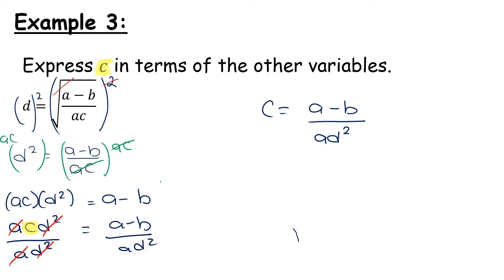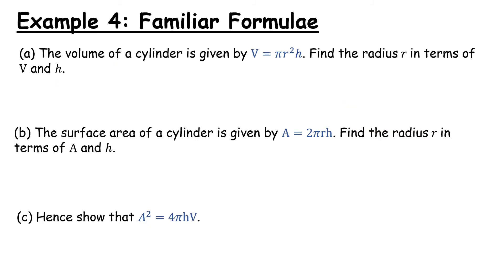I've now expressed c in terms of the other variables. So example four — this uses something familiar: the volume and surface area of a cylinder. Both formulas are given in your log tables, but this question asks you to rearrange them. The volume of a cylinder is given by v equals pi r squared h. Find the radius r in terms of v and h, so we're trying to get r on its own.